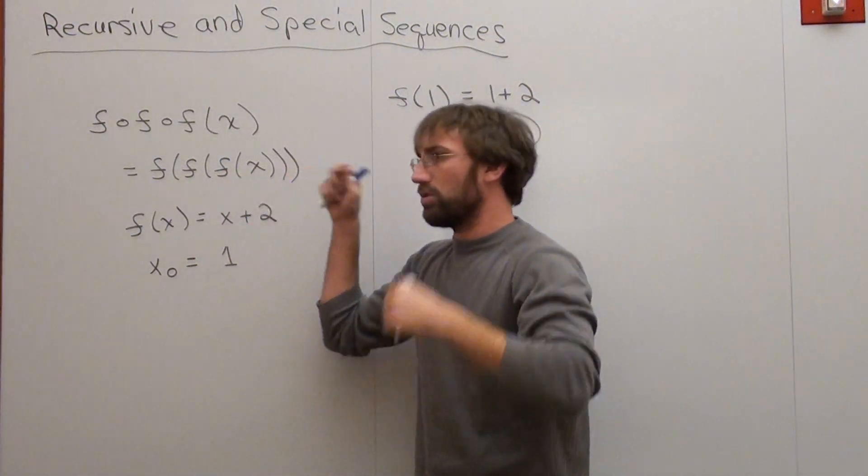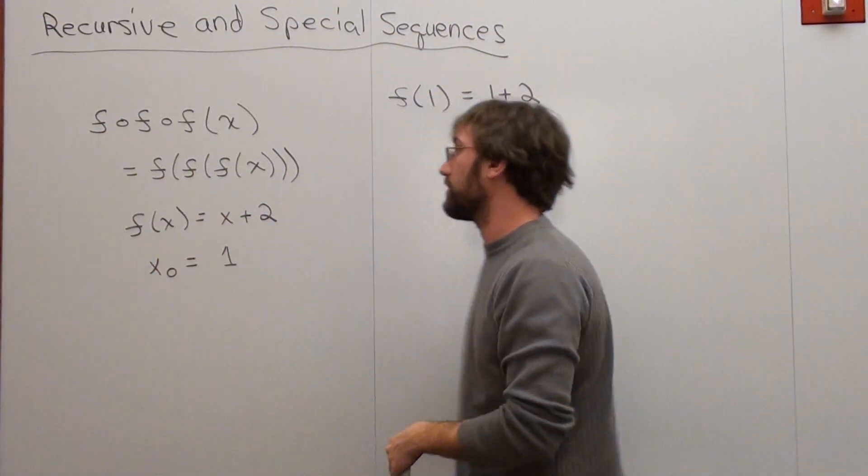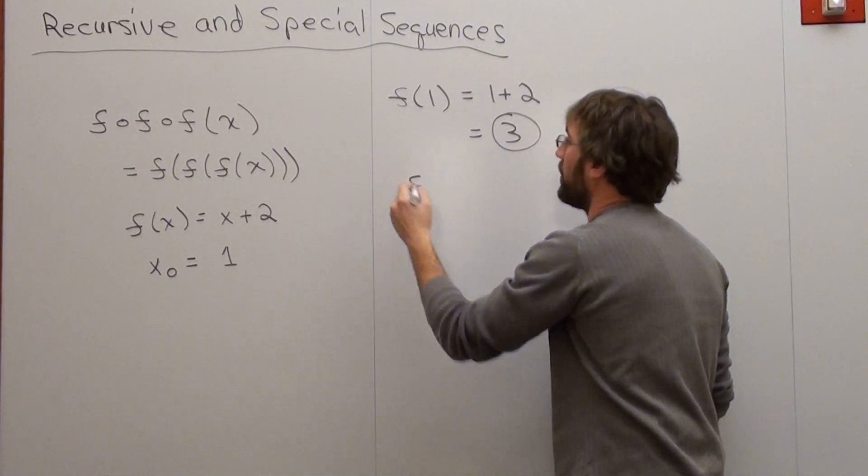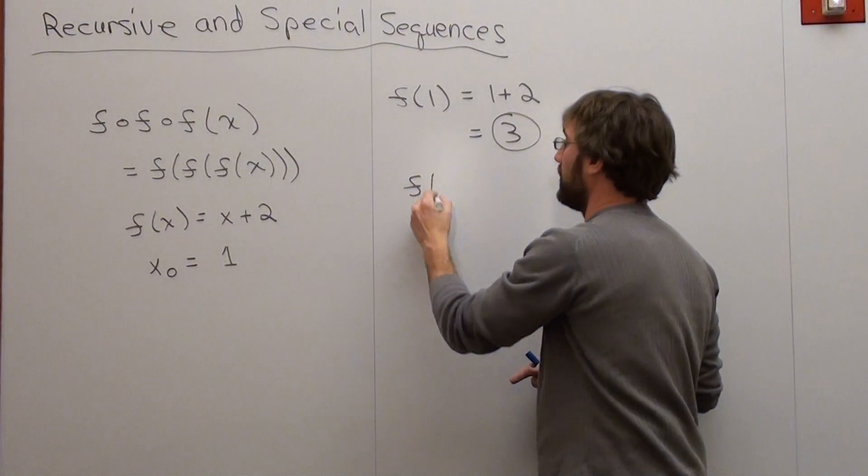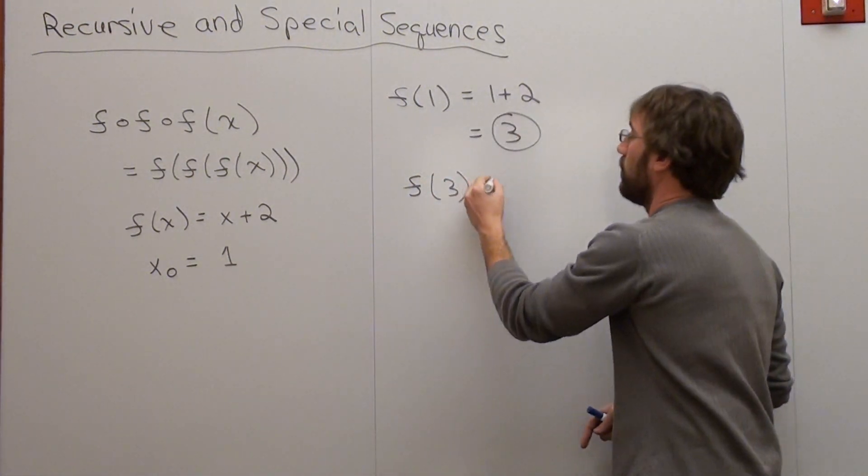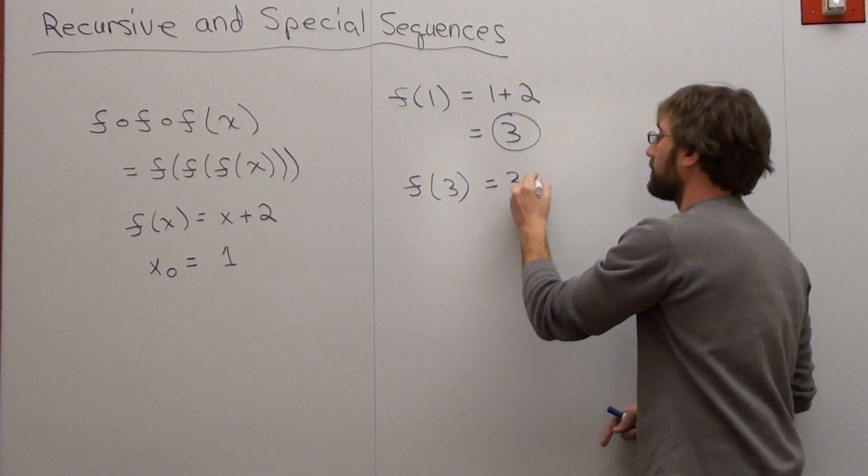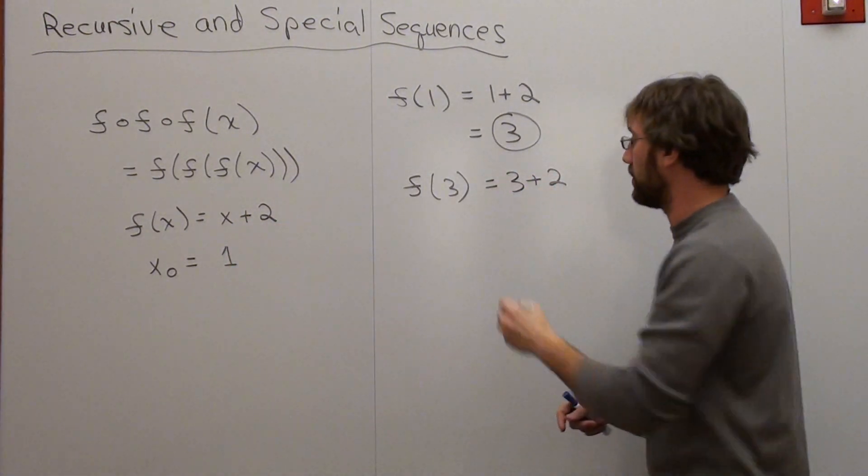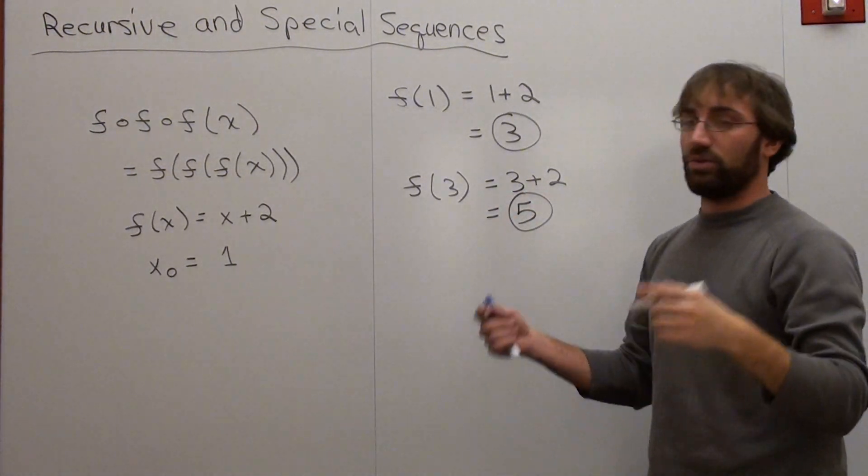We did this once, we just got to do this two more times. So let's do this two more times. Now what we do is, well, our new point isn't 1, it's 3. So we're going to put in f of 3, but it's into the same function, x plus 2. Well, x this time is not 1, it's 3, plus 2 equals 5.